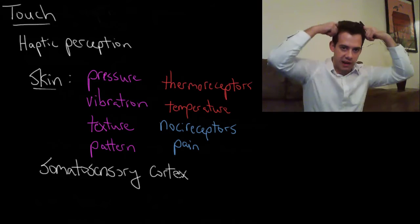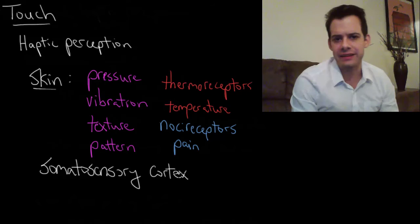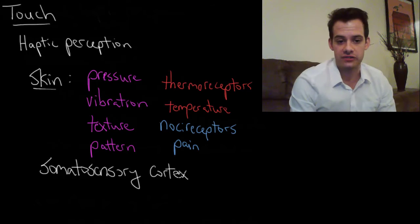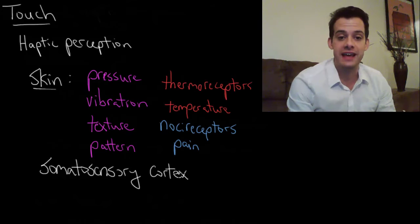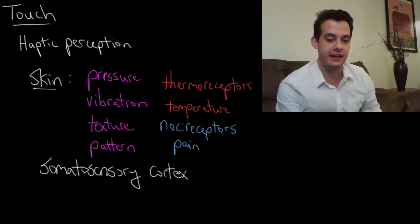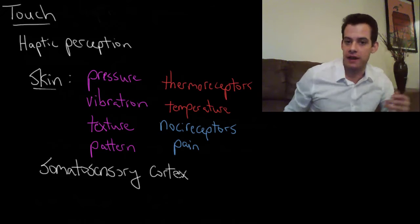So this is a strip of cortex on the parietal lobe. So it runs down on either side of the parietal lobe and there's two main things you should know about the somatosensory cortex. The first, you already know, is that it's contralateral.